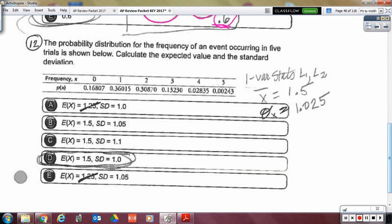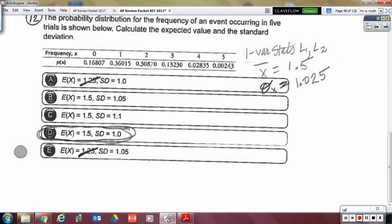Okay. Here's another one variable stats of list one with list two's frequency. And so you get answer D.